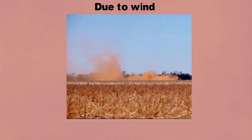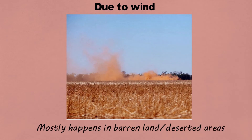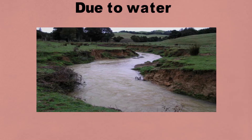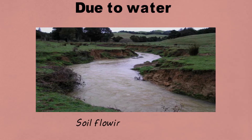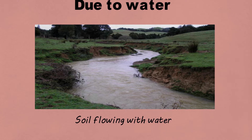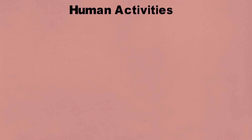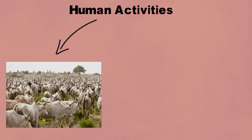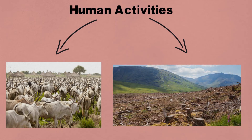Wind moves fertile soil due to wind power, which causes significant environmental damage. The impact of raindrops loosens the soil and gathers water on the ground, which causes soil runoff. Nutrients of soil are lost due to overcropping and overgrazing. Soil loosens due to deforestation, which in turn causes soil erosion.